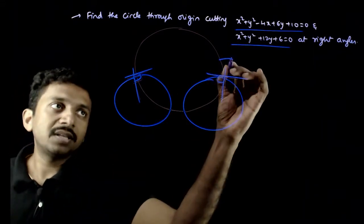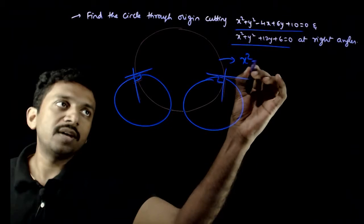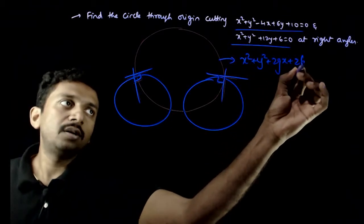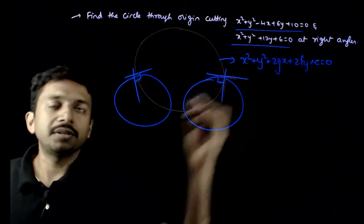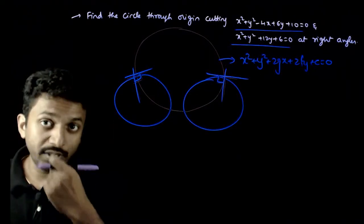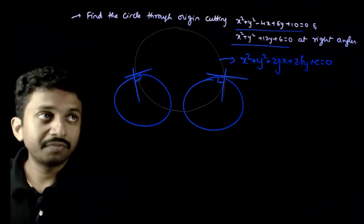So, what I do is, let this circle be x square plus y square plus 2gx plus 2fy plus c is equal to 0.